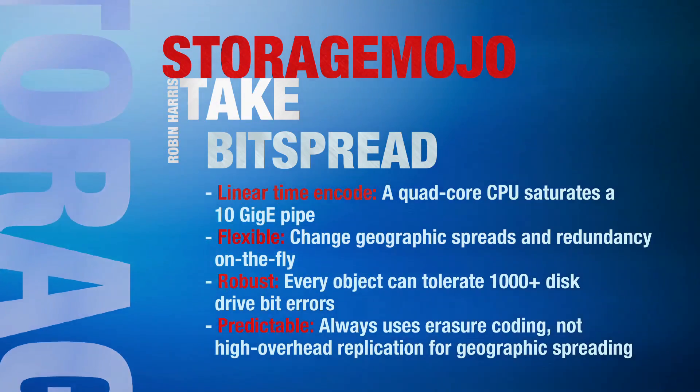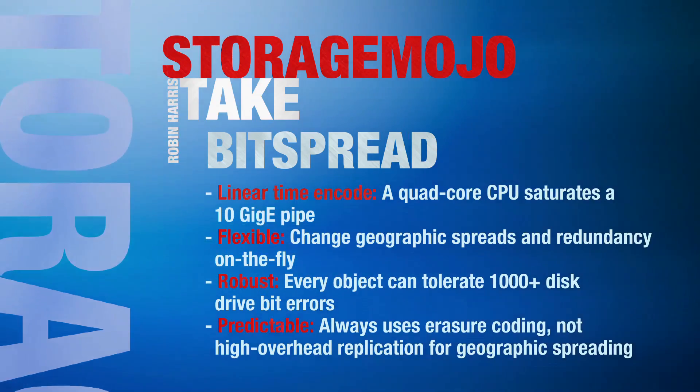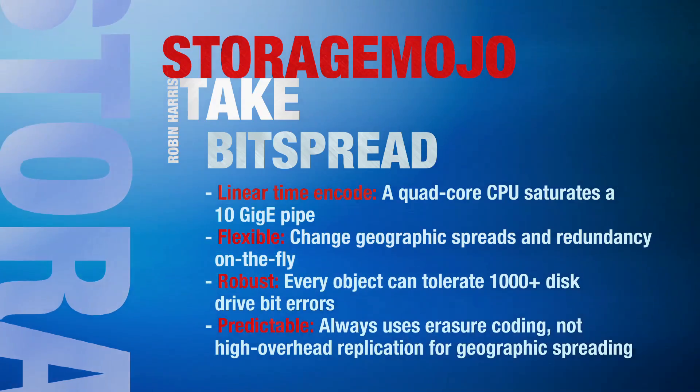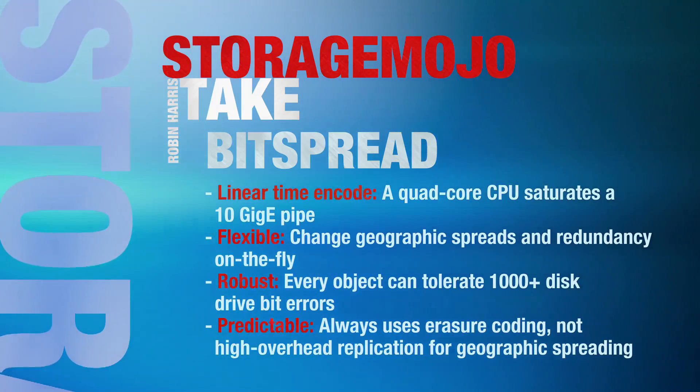AmplaData's secret sauce is their BitSpread rateless erasure coding implementation — a product of over 100 man-years of development, used in over 1,300 deployed customer systems. BitSpread is fast, efficient, flexible, robust, and predictable. Rateless erasure codes offer data protection with lower capacity overhead, faster rebuilds, and more redundancy than traditional RAID systems. Add the scalability of object storage and commodity components and it's clear that we are entering a post-RAID era. For Storage Mojo, I'm Robin Harris.